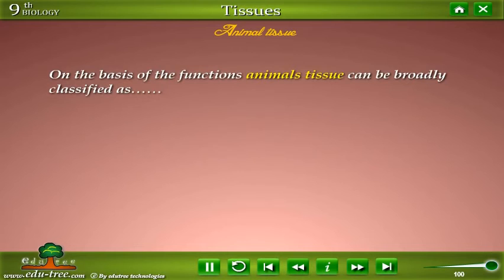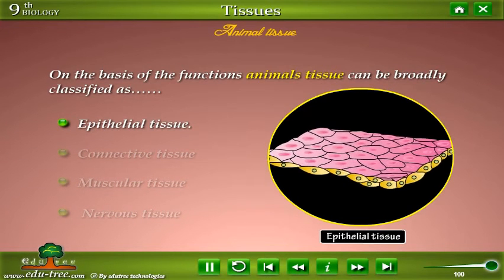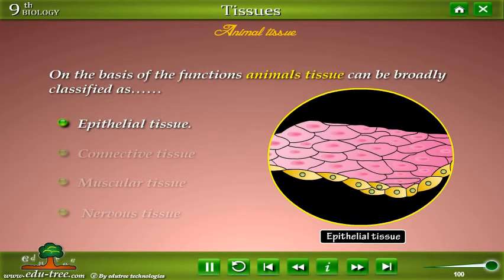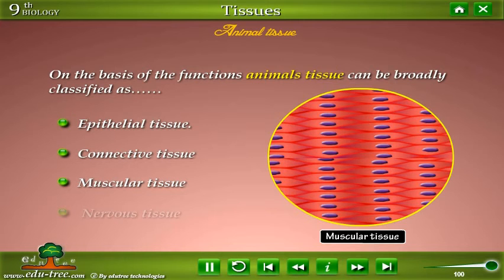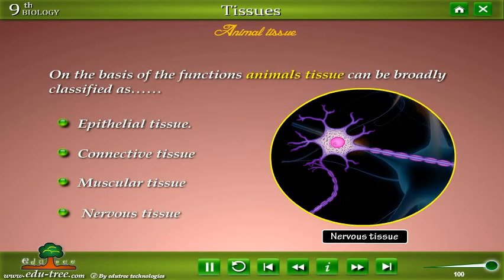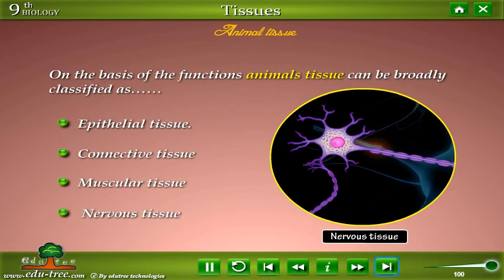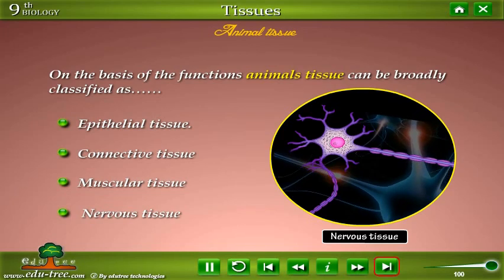On the basis of their functions, animal tissues can be broadly classified as: epithelial tissue, connective tissue, muscular tissue, and nervous tissue.